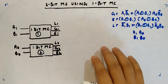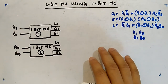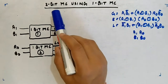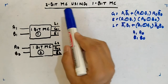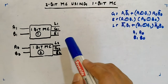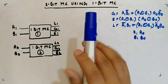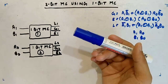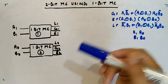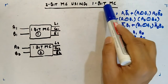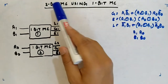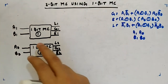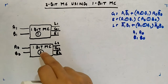Let's look at the easier way of designing magnitude comparators. I'll design a two-bit magnitude comparator using one-bit magnitude comparators, so you will see how you can utilize already existing magnitude comparators to make bigger ones. We are using a smaller one-bit type to make a bigger two-bit type — a simple example.